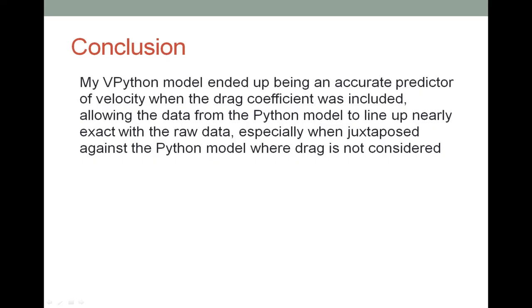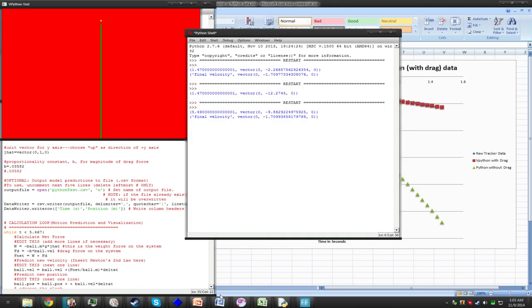In conclusion, my vPython model ended up being an accurate predictor of velocity when the drag coefficient was included, allowing the data from the Python model to line up nearly exact with the raw data, especially when juxtaposed against the Python model where drag is not considered.